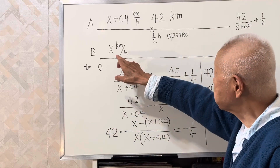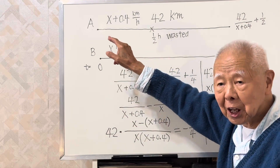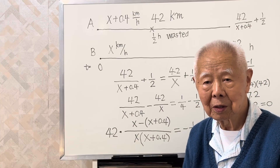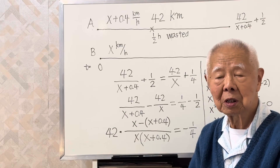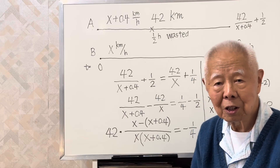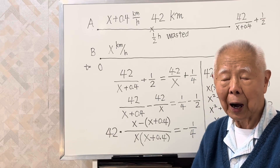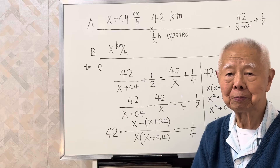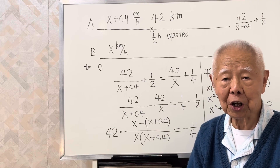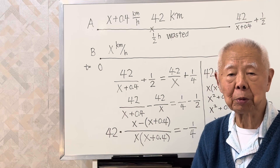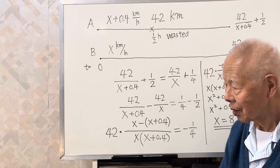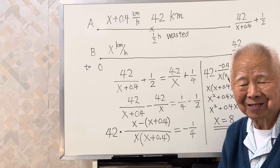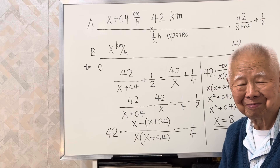My answer is X equals 8 — eight kilometers per hour. So one speed is 8 and the other speed is 8.4 kilometers per hour. This question is best illustrated by doing a sketch like that; from the sketch you can write down the relation. This is an algebra word problem question. I hope you follow the procedure — thank you for watching, see you next time!